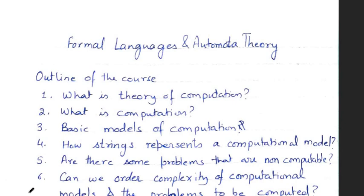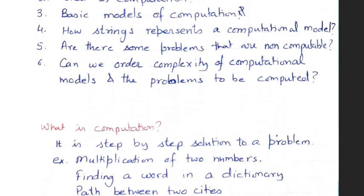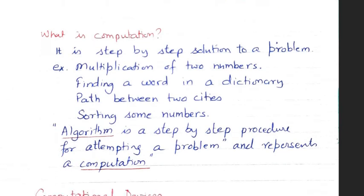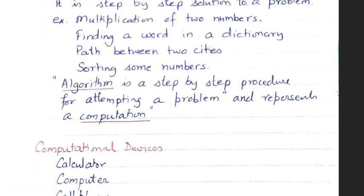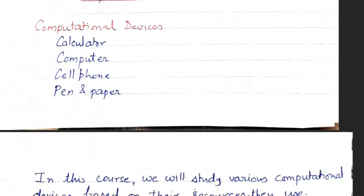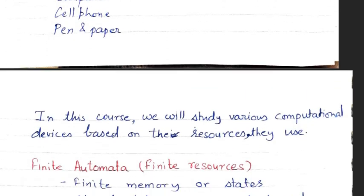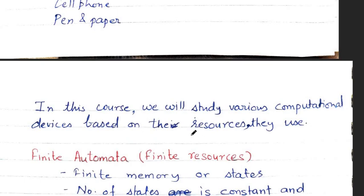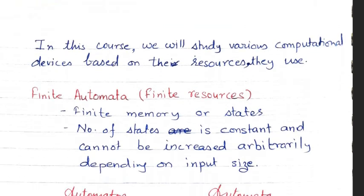In this lecture series, we have already tried to understand what formal languages and automata theory is, and what we will be covering under this course. We discussed basic questions like what is computation, what are the computational devices, and we said we will be discussing various computational devices based on their resources and what kind of questions these computational machines can answer.